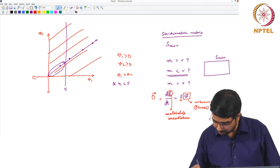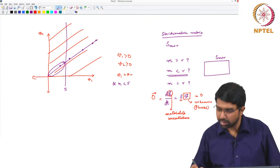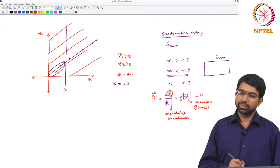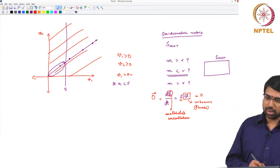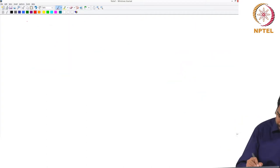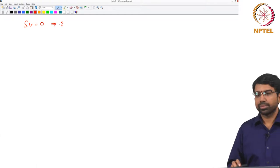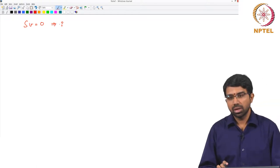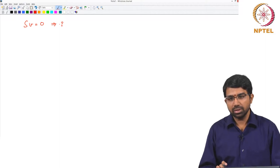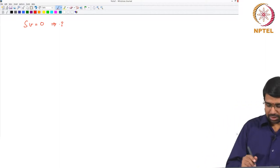So what does that mean? It means that SV equals 0. What does SV equal to 0 mean? It is a system of linear equations.